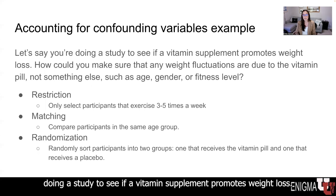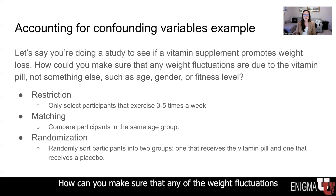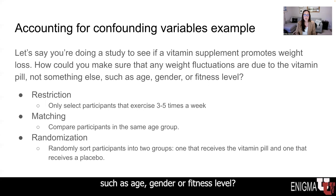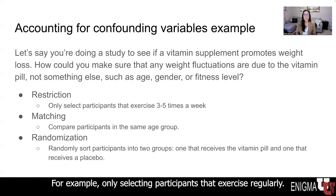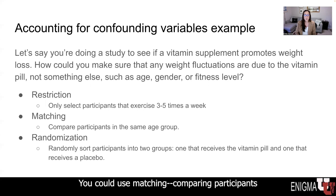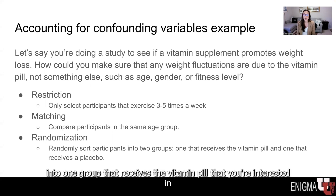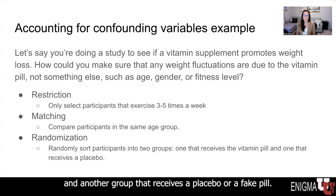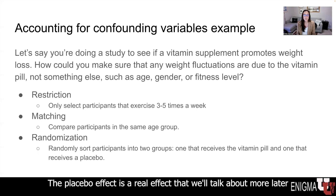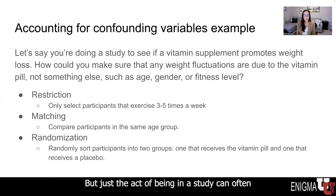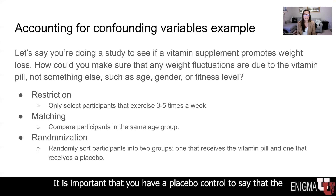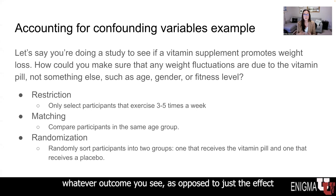Let's say you are doing a study to see if a vitamin supplement promotes weight loss. How can you make sure that any weight fluctuations you see are due to the vitamin pill and not something else, such as age, gender, or fitness level? You could use restriction — only selecting participants that exercise regularly — use matching by comparing participants within the same age group, and use randomization by randomly sorting participants into one group that receives the vitamin pill and another that receives a placebo or fake pill. The placebo effect is a real effect we'll discuss more later — just being in a study can often affect people's behavior, so a placebo control is important to confirm that the intervention is what's causing the outcome.